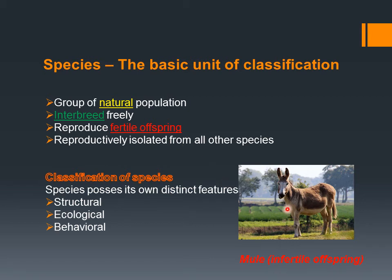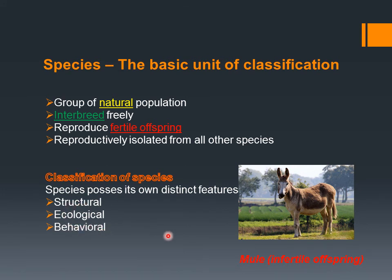If species reproduce with a closely related species, they produce unfertile offspring like mule. However, interbreeding is not the only criterion for species recognition, because some individuals reproduce asexually — so interbreeding alone cannot define a species. There are many other criteria, such as distinct structure, ecological and behavioral characteristics, habits and habitats. Species are independent evolutionary units that can make their own identity.